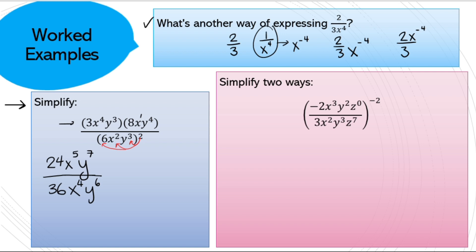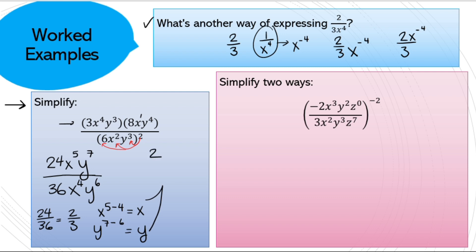Now I look at each piece separately. 24 over 36 simplifies to 2 over 3. x⁵ over x⁴: subtract the exponents to get x¹. y⁷ over y⁶: subtract to get y¹, or just y. Putting it all back together gives 2xy over 3 — final answer.